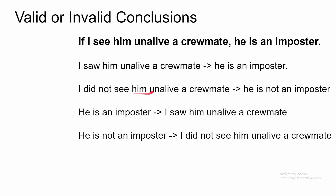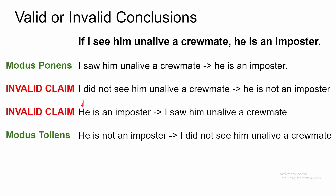Now let's say you did not see him on the live crewmate, so you say he is not the imposter. Is this valid? If you said yes, that is wrong. This is not a valid conclusion. Just because you did not see him on the live crewmate doesn't mean he is not the imposter. Now, is this a valid claim — he is an imposter? Let's say the game has ended and you know who was the imposter. Could you say that you saw him on the live crewmate because he is an imposter? Nope, that is not valid.